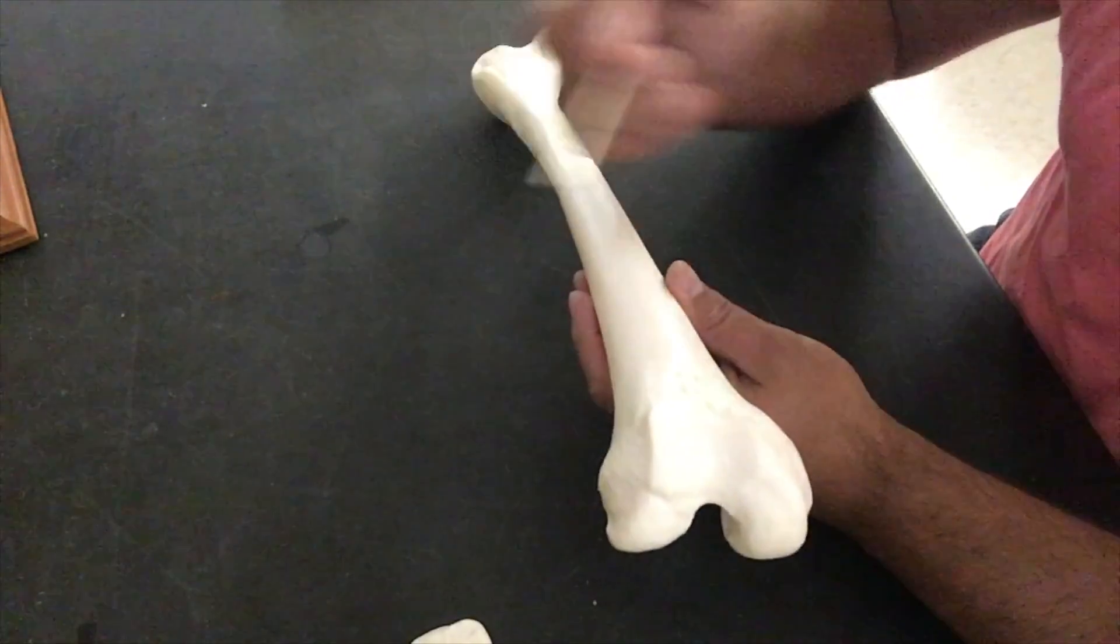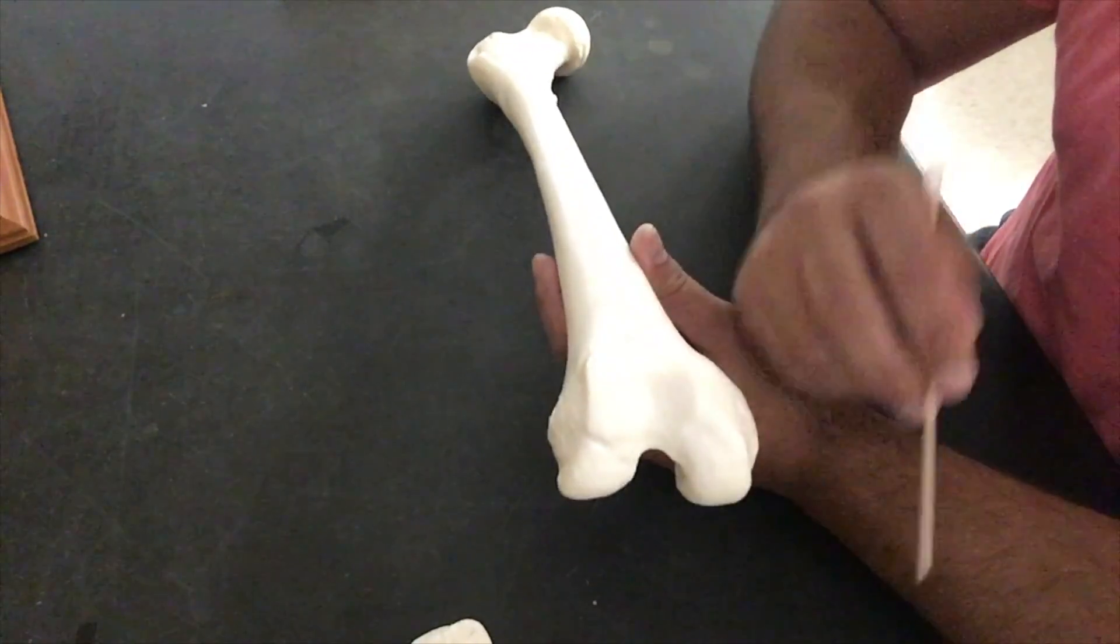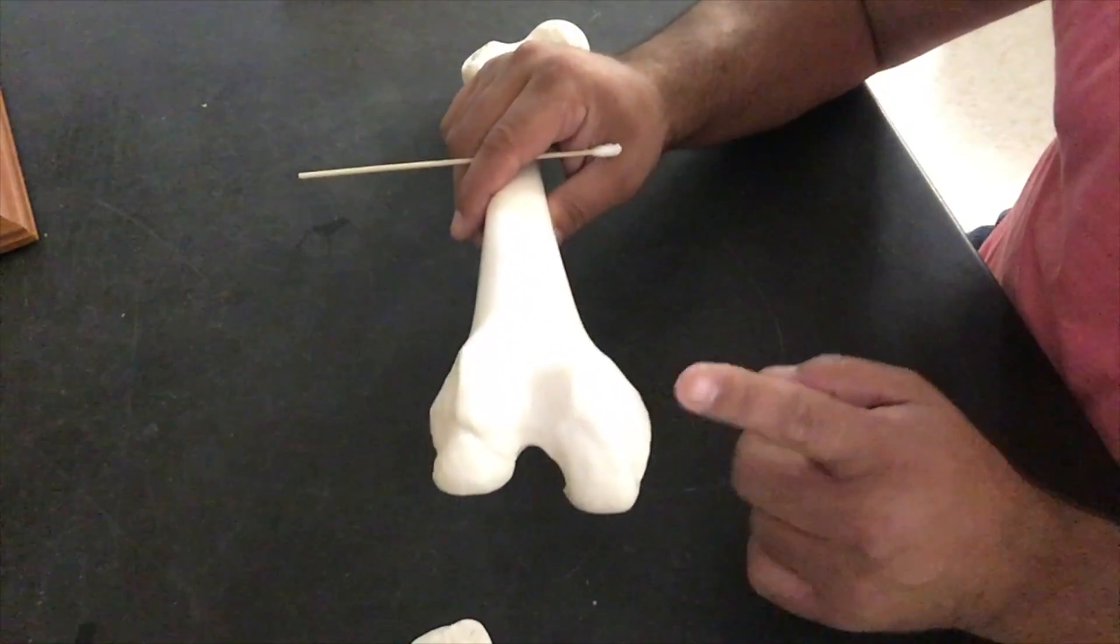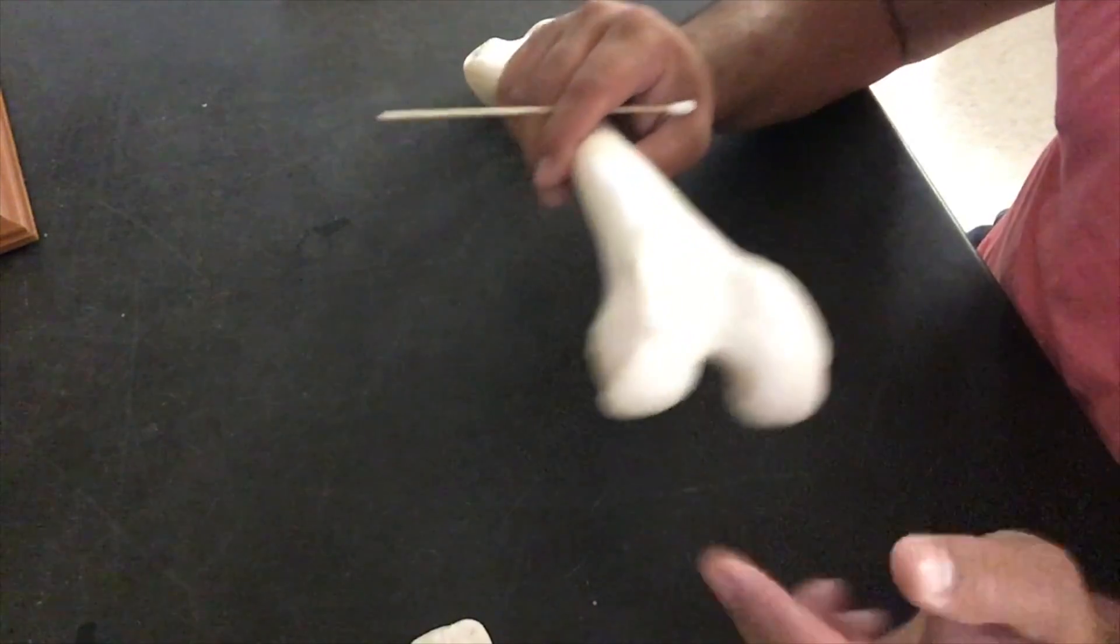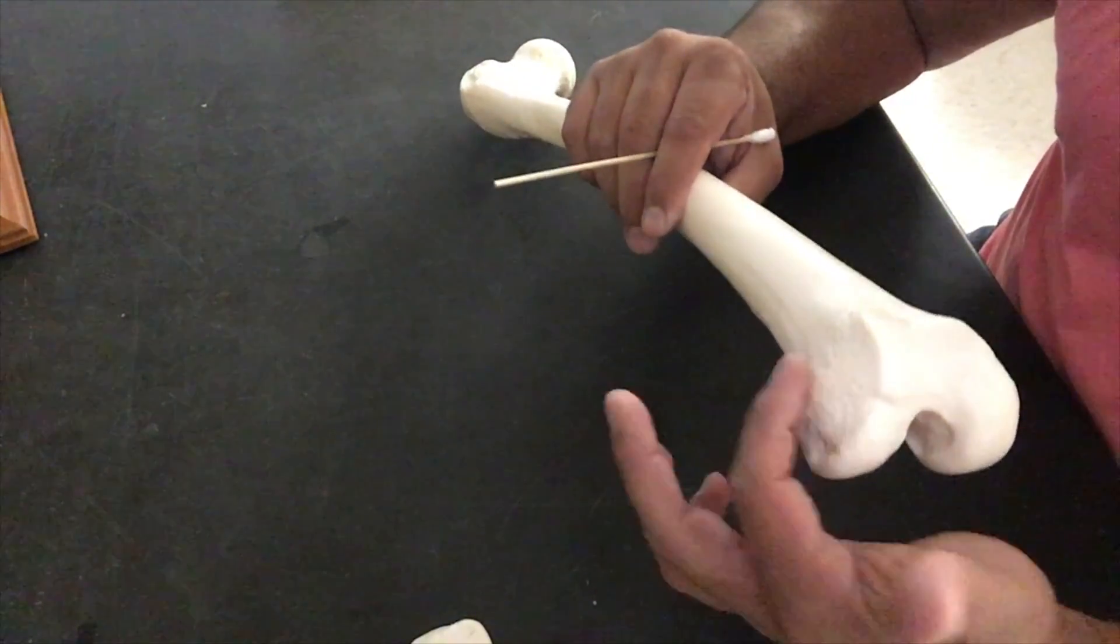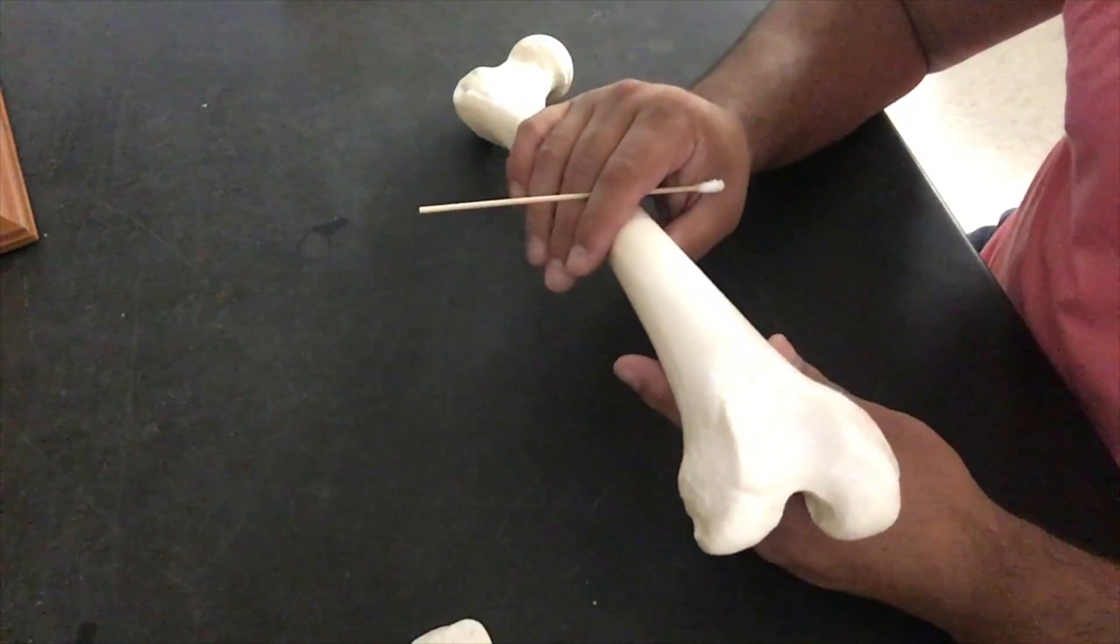So then you say, well, it can't just be called an epicondyle. Well, you're right. And it's going to follow suit with the directional terms of the condyle. If this is our medial condyle, this is going to be our medial epicondyle. If this is our lateral condyle, this is going to be our lateral epicondyle.